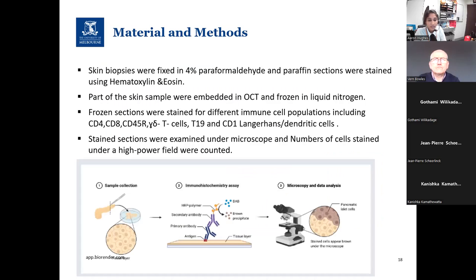For materials and methods to achieve Aim 1, skin samples were first fixed in formalin and paraffin sections were stained using a haematoxylin and eosin technique. Part of the skin samples were embedded in OCT and frozen in liquid nitrogen. These frozen sections were then stained for different immune cell populations, and stained cells were counted under high power field.